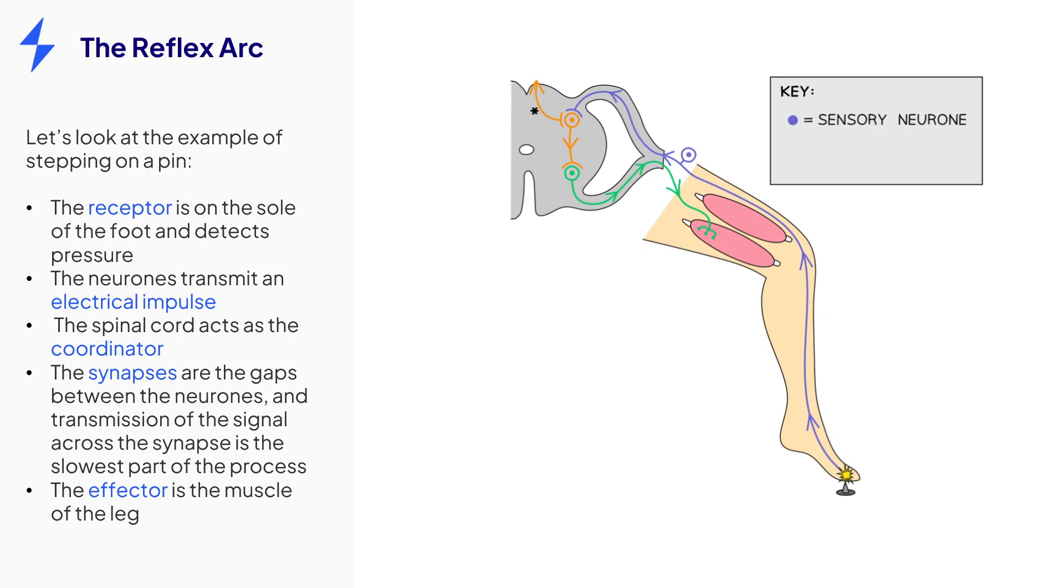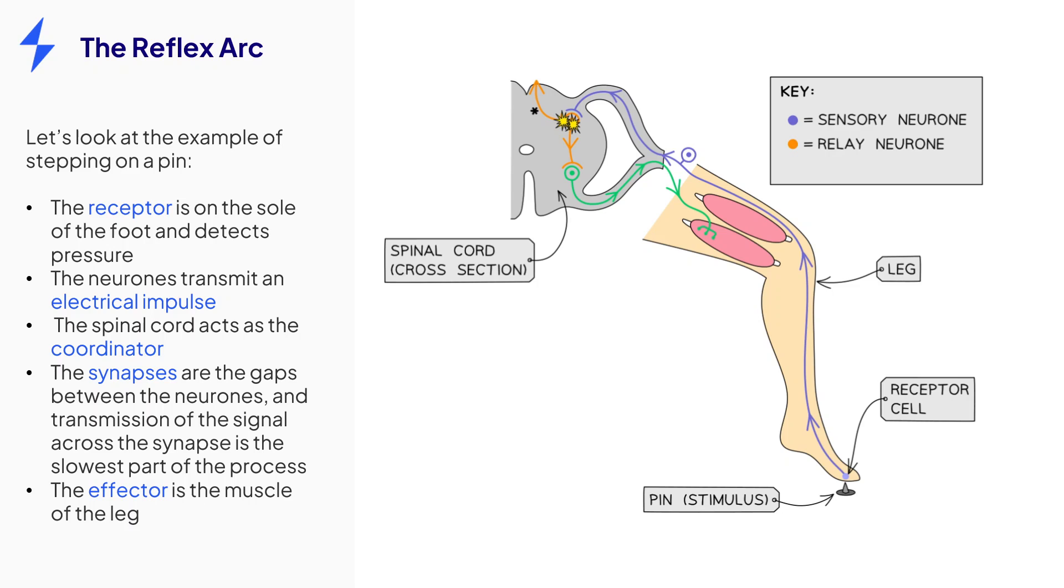Let's take an example of stepping on a sharp pin. The pressure from the pin is the stimulus and is detected by the receptors on the sole of the foot. This triggers the electrical nerve impulse to start and to travel up the leg along the sensory neuron. The sensory neuron sends the impulse to the spinal cord, which acts as the coordinator.